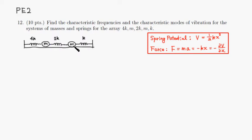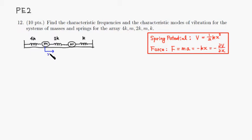What we want to do first is find the spring potential V. Spring potential is one half times spring constant times displacement squared. Since we have two masses, we need two displacements. We'll call the displacement of the first mass x and the displacement of the second mass y.